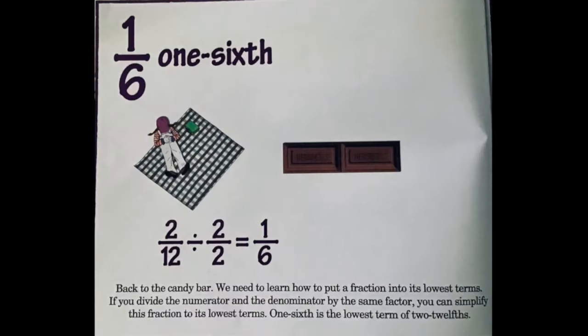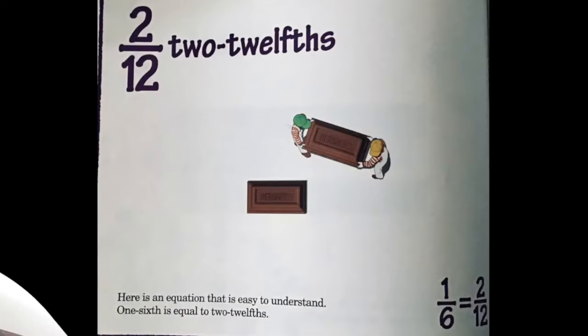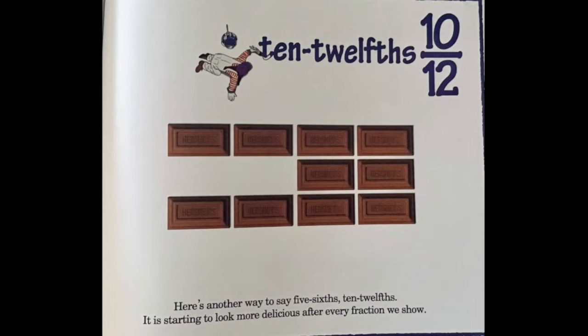Back to the candy bar. We need to learn how to put a fraction into its lowest terms. If you divide the numerator and the denominator by the same factor, you can simplify a fraction to its lowest terms. One sixth is the lowest term of two twelfths. Five sixths is what is left over from a whole candy bar after removing one sixth. One sixth is equal to two twelfths, and five sixths can also be written as ten twelfths. It is starting to look more delicious after every fraction we show.